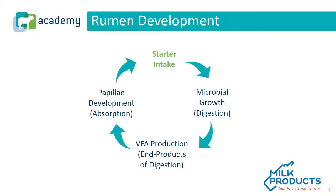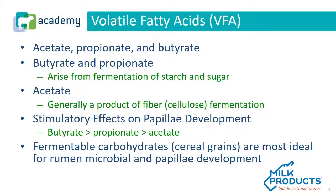The cycle of rumen development starts with good starter intake — and I will add starter and water intake. Optimal intake of a good quality starter results in microbial growth and digestion, which results in volatile fatty acid production, which are the end products of digestion, resulting in papillae development and absorption for a good functional rumen. The volatile fatty acids we're concerned about in the development of the rumen are acetate, propionate, and butyrate.